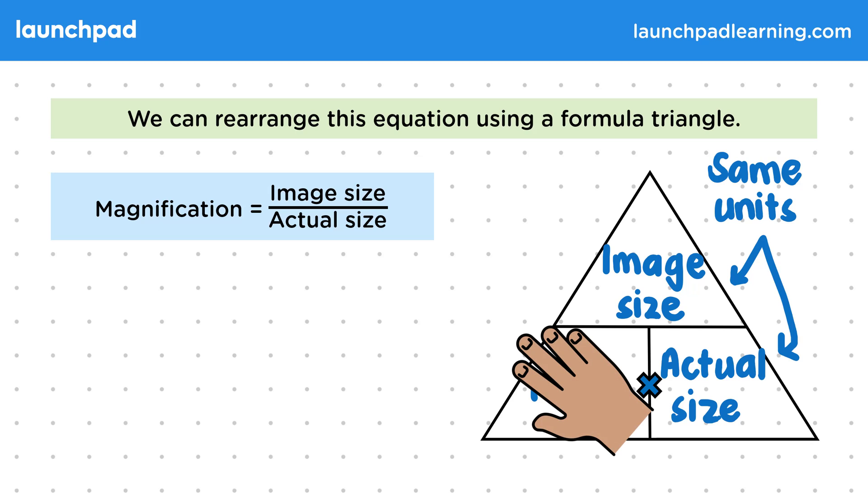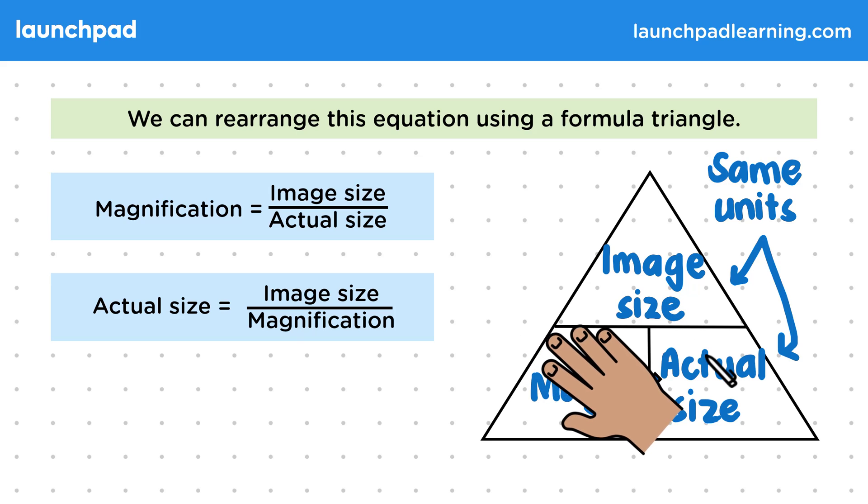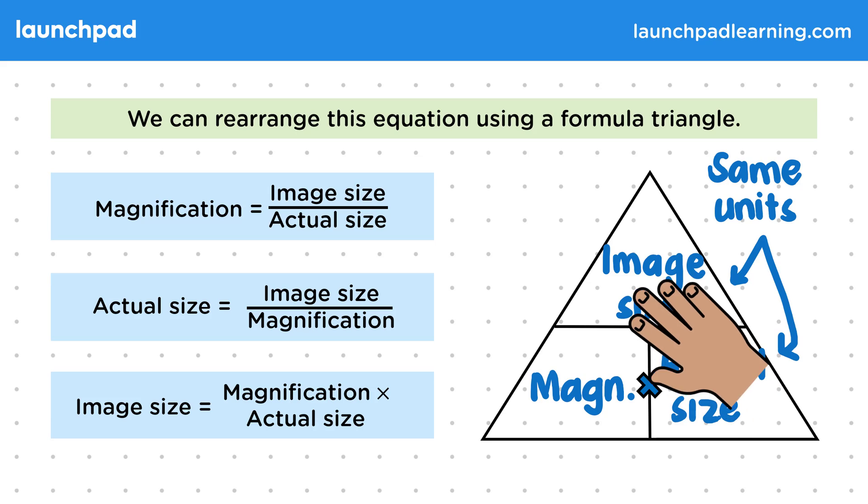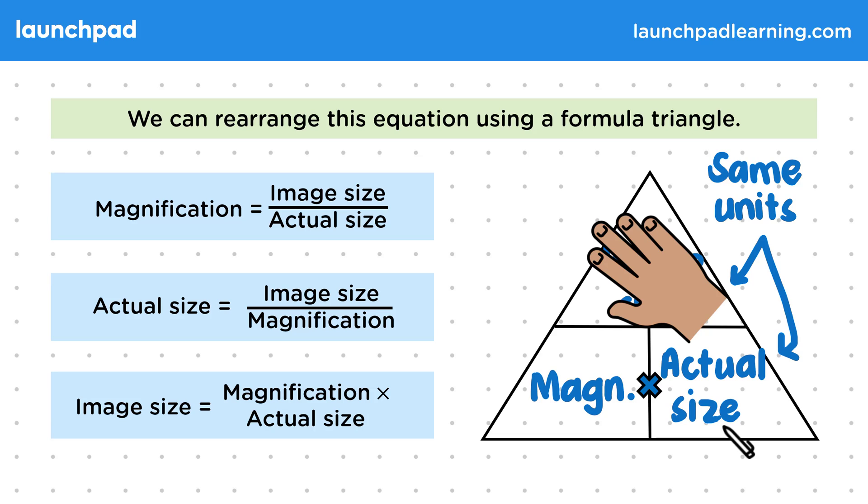This equation can be rearranged just by putting your hand over the part that's missing. For example, if we are missing magnification, we can find this out by dividing the image size by the actual size. If actual size is missing, then we just divide image size by magnification. And if we are missing the image size, all we need to do is magnification multiplied by the actual size. You should be able to carry out calculations involving magnification, actual size and image size.